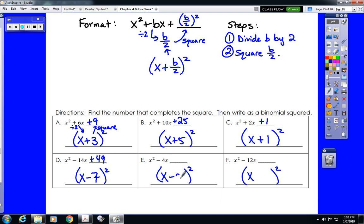Negative 4 divided by 2 is negative 2. Negative 2 squared is positive 4. Negative 12 divided by 2 is negative 6. Negative 6 squared is positive 36.